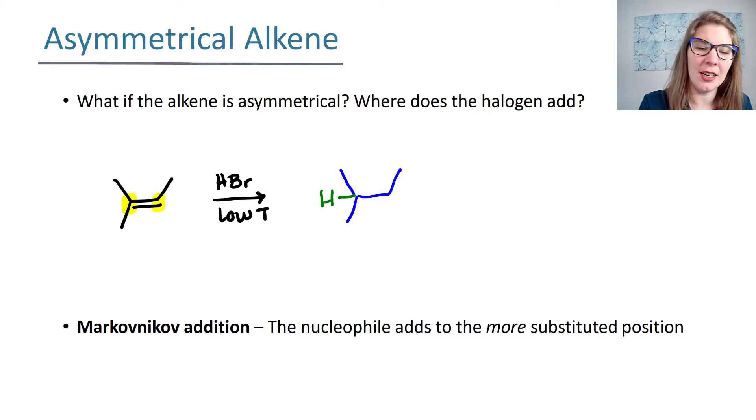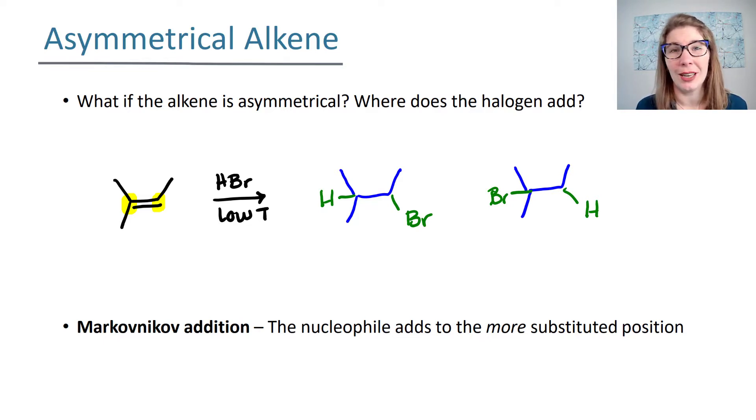What's going to happen in your addition reactions is you're going to focus on the carbons that are sp2 hybridized, and your groups are going to add to each of those carbons. So you're going to have a hydrogen that adds here, and then your bromine could add here. And the other potential location that your bromine could go is here, whereas your hydrogen could go here. Now only one of these is going to form in this reaction. So how do we know where that halogen is going to add?